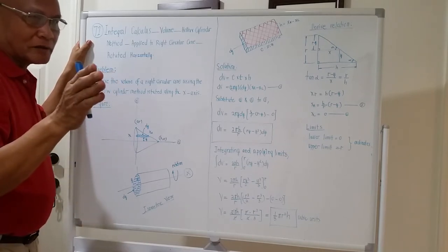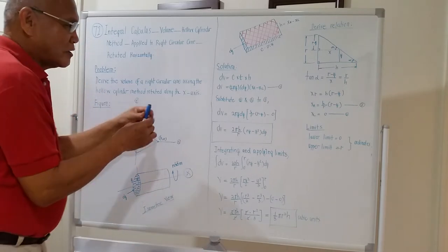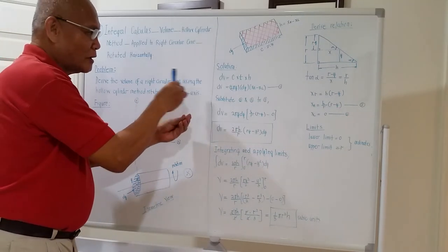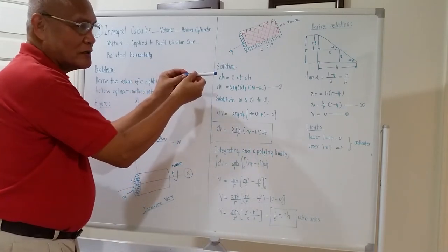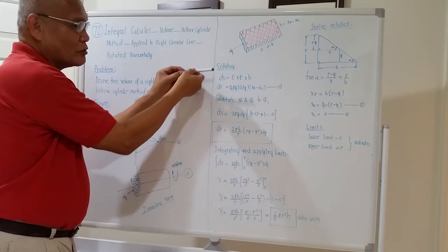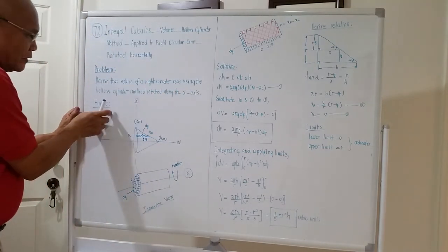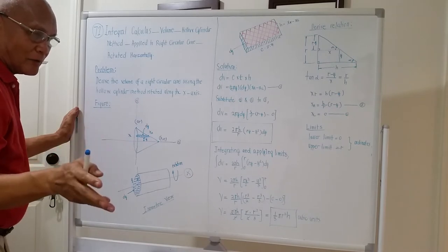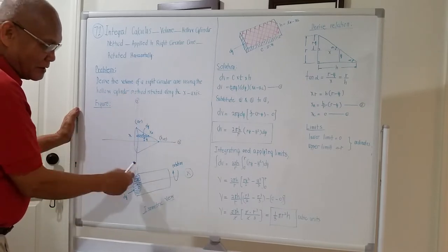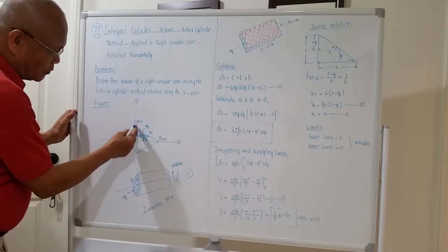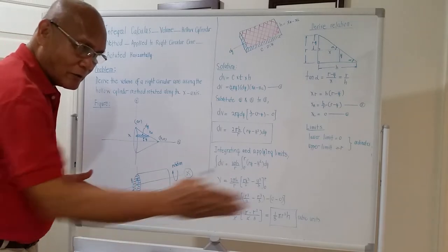This time, the axis of rotation is along the X-axis. Yesterday we used a vertical slice and rotated along the Y-axis. This afternoon it will be a horizontal slice, still under the hollow cylinder method, but rotated along the X-axis. We bring out the graph of the right circular cone on the Cartesian coordinate system, with the cone lying down.